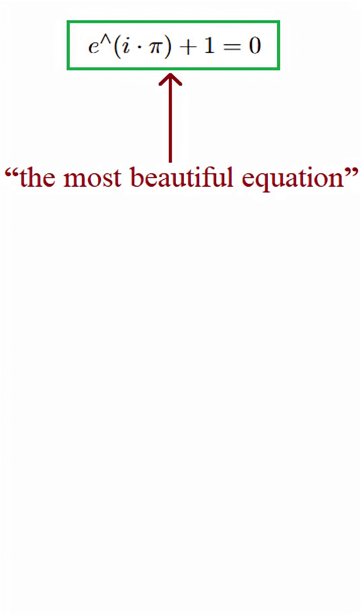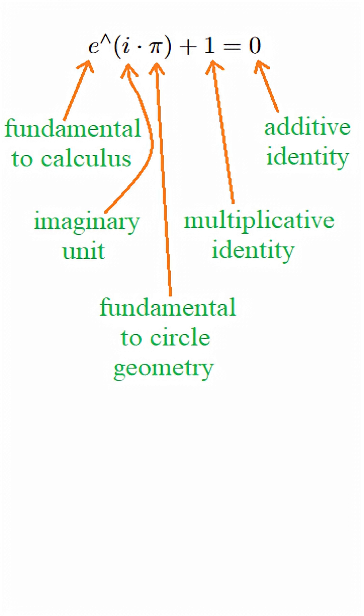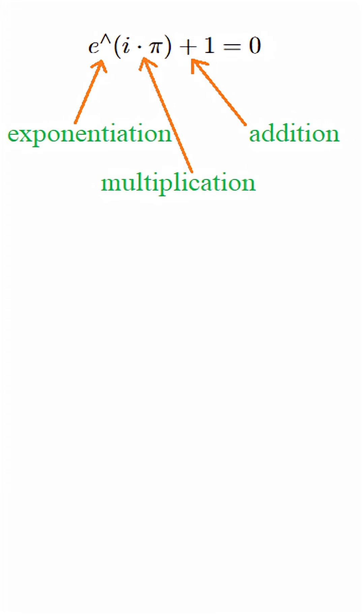This equation is sometimes said to be the most beautiful equation in mathematics, on the grounds that it consists of the five most fundamental numbers in mathematics each appearing exactly once, and the three most fundamental binary operations each appearing exactly once.